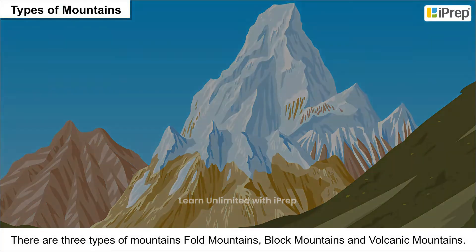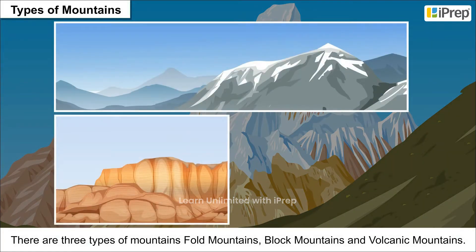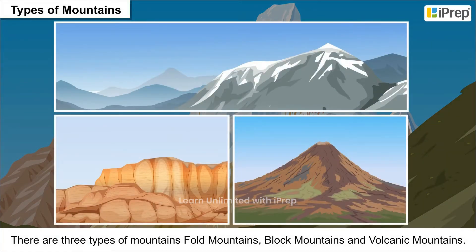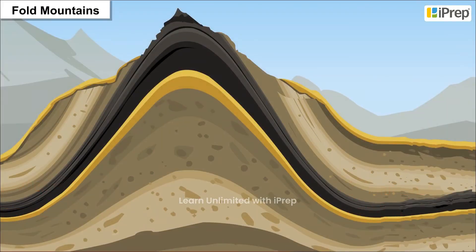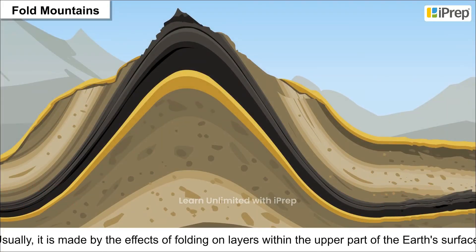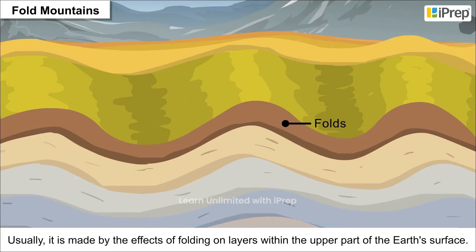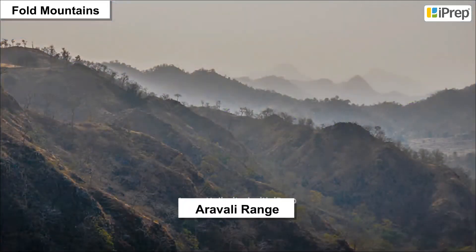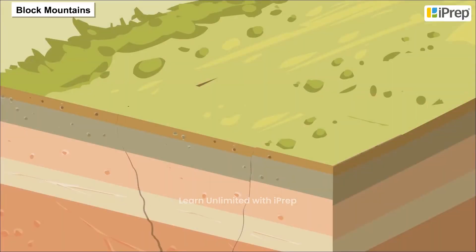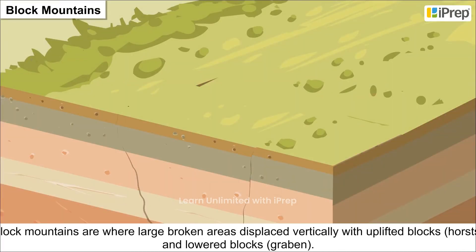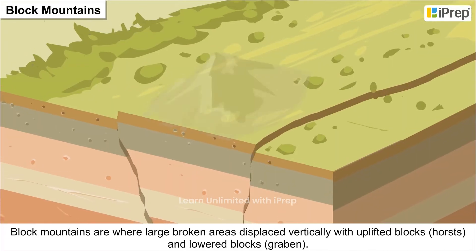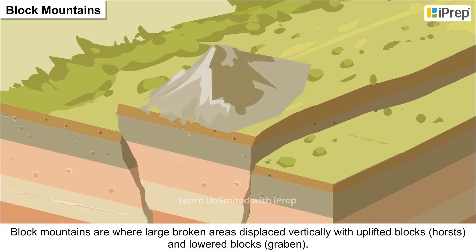There are three types of mountains: fold mountains, block mountains, and volcanic mountains. Fold mountains are usually made by the effects of folding on layers within the upper part of the earth's surface. For example, the Aravali range in India is one of the oldest fold mountain systems in the world.